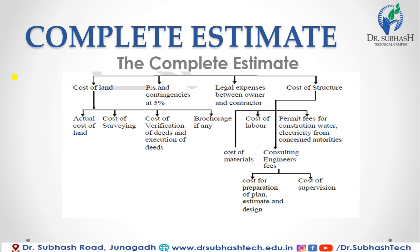The second type is provisional sum and contingency at five percentage. The third type is legal expenses between owner and contractor — expenses between them are also included in the estimation. The fourth and last main type for complete estimate is cost of structure, which is further divided into types.